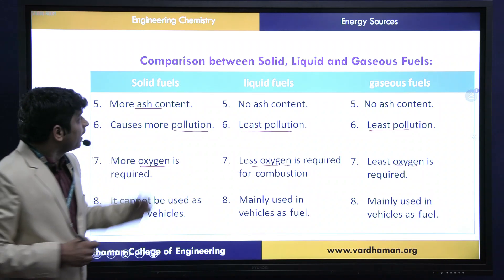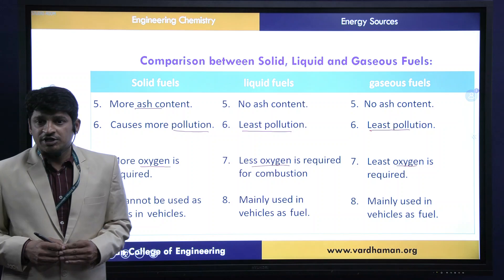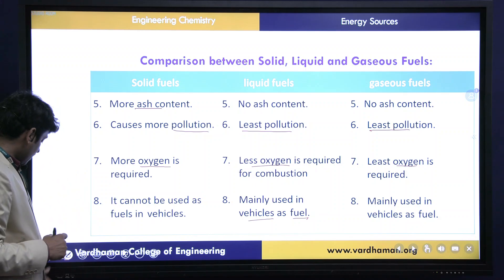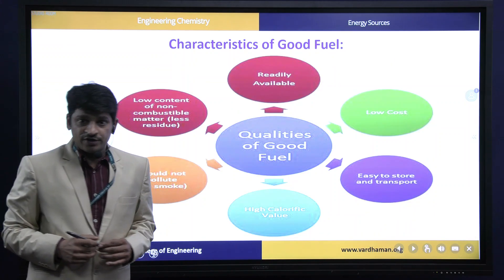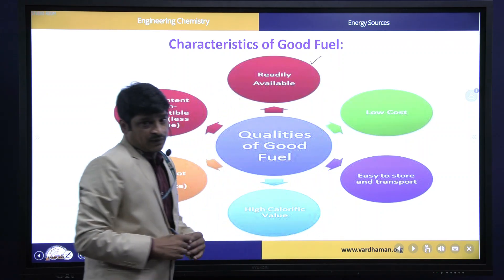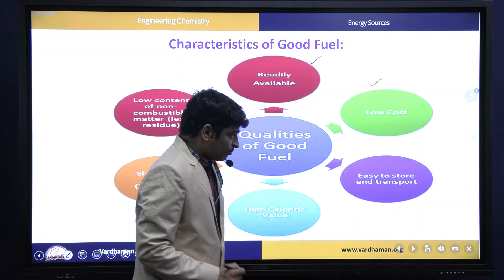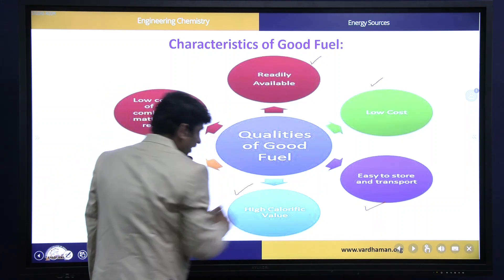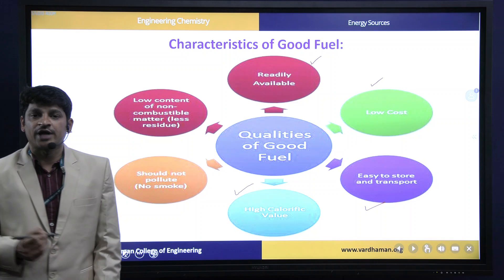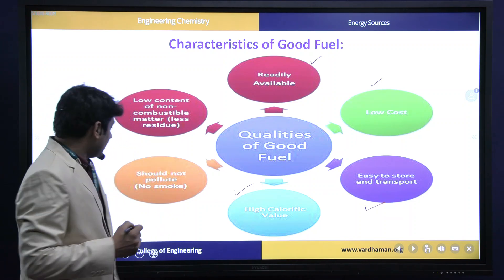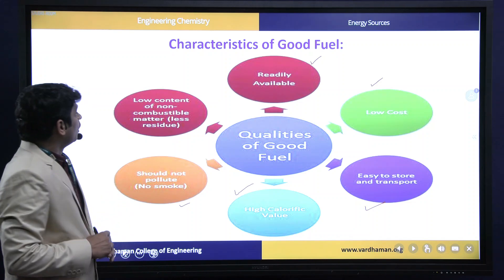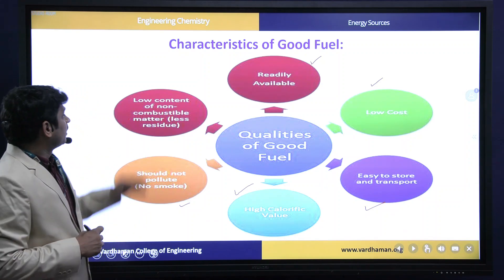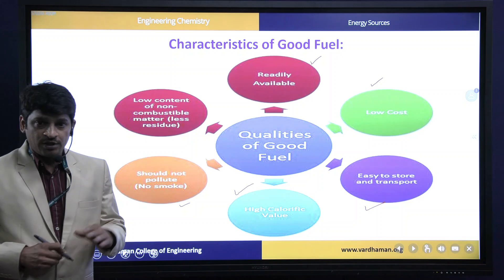The major application of liquid and gaseous fuels is as fuel in automobiles. Coming to the characteristics of a good fuel: it should be easily abundant and low in cost. It must be easy to transport and store. It should give a high calorific value — to achieve this, the fuel should have a high percentage of carbon. It should not cause pollution and should have a low content of non-combustible matter such as volatile matter or ash content.